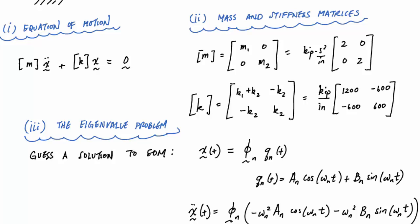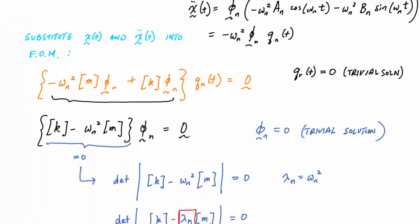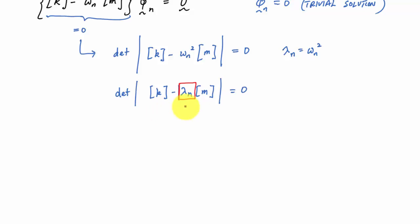So what I'm going to do now is take this stiffness matrix and this mass matrix and substitute them straight into my determinant to solve for these characteristic values, these lambdas, and get the natural frequencies that I need.